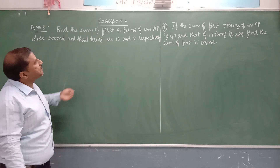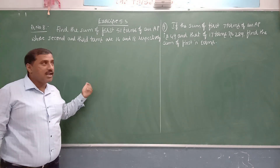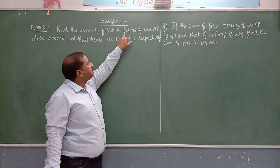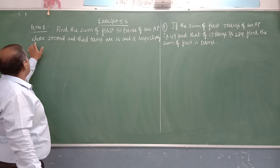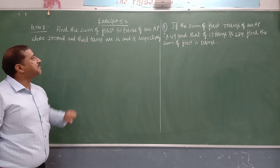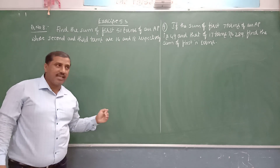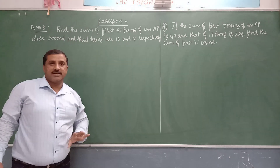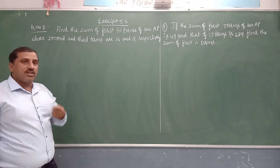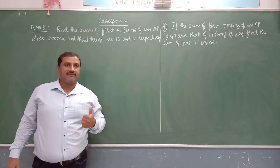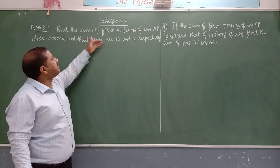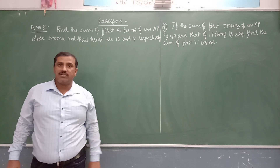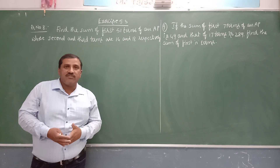We have to find the sum, meaning the addition, of 51 terms of an AP whose second and third terms are 14 and 18 respectively. So two terms are given: the second term and the third term, and the number of terms is 51.